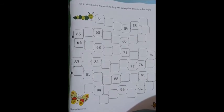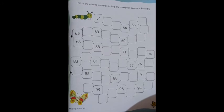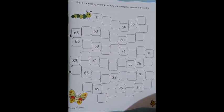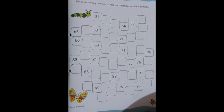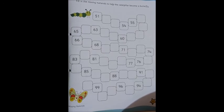Now we move on to the next page, page number 61, and what we have to do is help the caterpillar become a butterfly. While he is going through this process, we will write the numbers which are missing. Yes, so let's read what is written: Fill in the missing numerals to help the caterpillar become a butterfly. So let's begin.